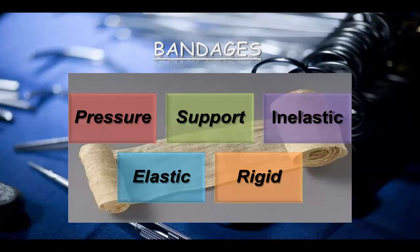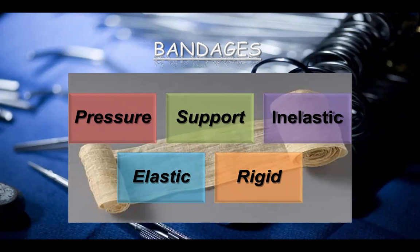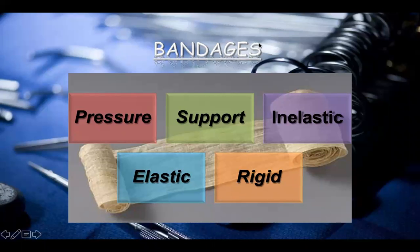First, bandages. You have seen bandages and probably have experience with them — sometimes when you have cuts, bandage is applied. Bandages are made up of cotton and are used to apply pressure over a wound and for support. They can also be elastic or rigid. These are the various characteristics of bandages.